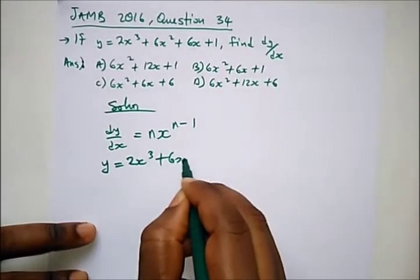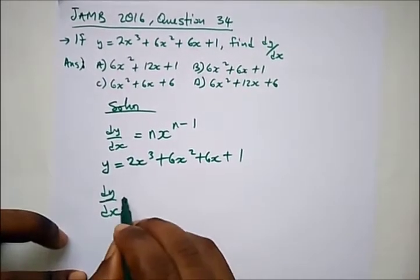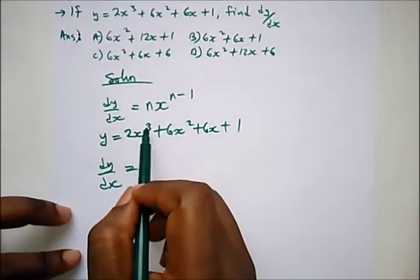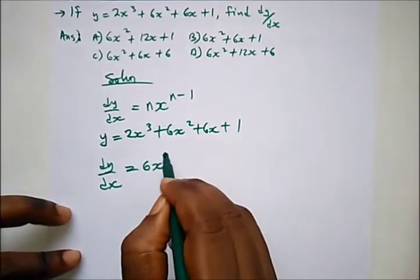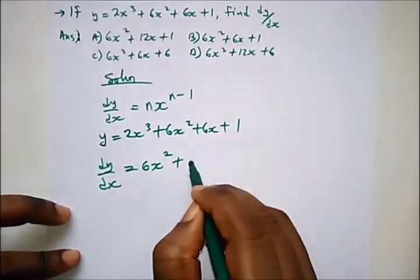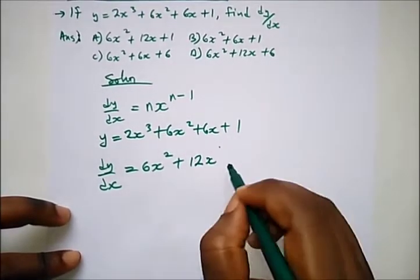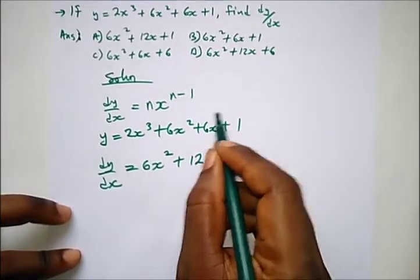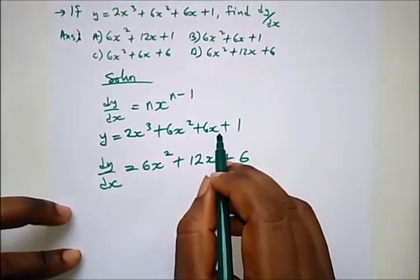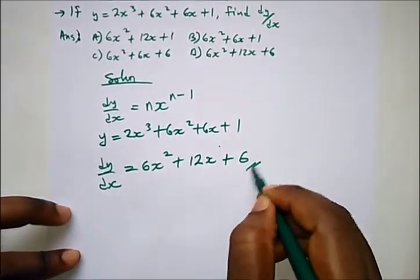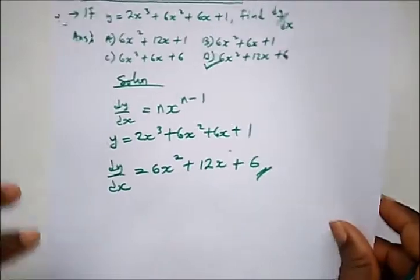We have y equal to 2x³ + 6x² + 6x + 1, so dy/dx will be: 3 times 2 gives 6x^(3−1), that is 6x²; plus 2 times 6 gives 12x^(2−1), that is 12x; plus 1 times 6 gives 6, and x^(1−1) = x⁰ = 1, so we still have 6. Our answer is option D.